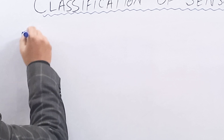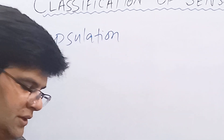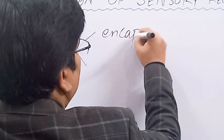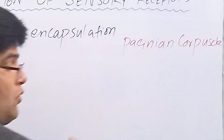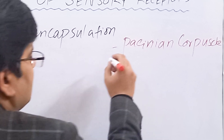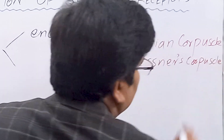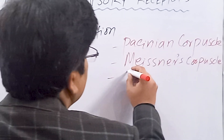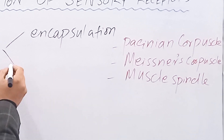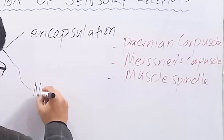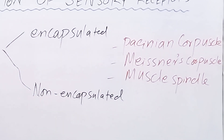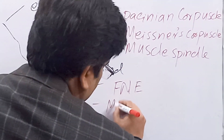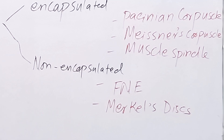Another way to classify receptors is on the basis of their encapsulation. Receptors that are encapsulated are called encapsulated receptors and have a capsule made of connective tissue. Examples are the Pacinian corpuscle, important for detecting fast vibration and deep pressure; Meissner's corpuscles, which detect slow frequency vibrations; and muscle spindle. Receptors not covered by a connective tissue capsule are called non-encapsulated receptors — examples are free nerve endings and Merkel's discs.